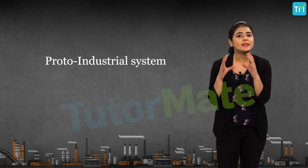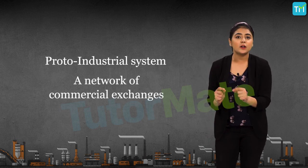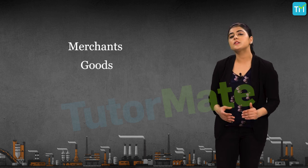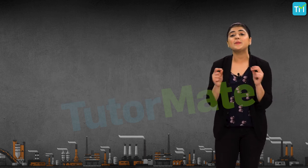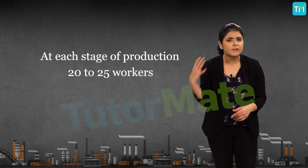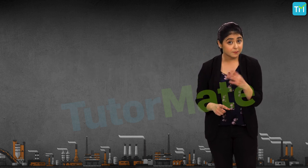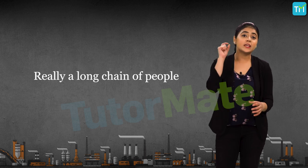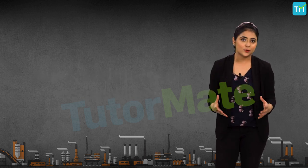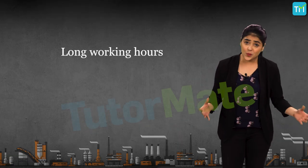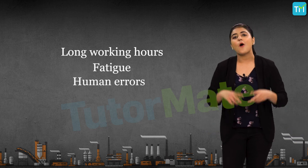The proto-industrial system was a part of a network of commercial exchanges, controlled by merchants, and goods were produced by a vast number of producers working within their family farms and not in factories. At each stage of production, 20 to 25 workers were employed by a merchant, meaning each merchant was controlling hundreds of workers — a long chain of people working for a single production. This process obviously took a lot of time, and the results, although good in quality, were very low in quantity. Because of the long working hours and fatigue, human errors also became a part of it.